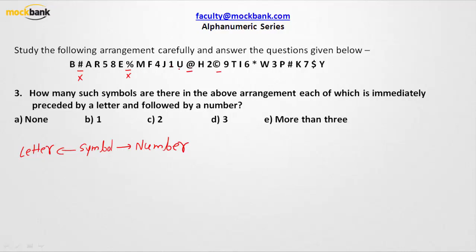The at-rate symbol is preceded by U and followed by H, so that is also not the case. How about this mark? This is preceded by two and followed by nine — both of them are numbers — hence this is also not the case.